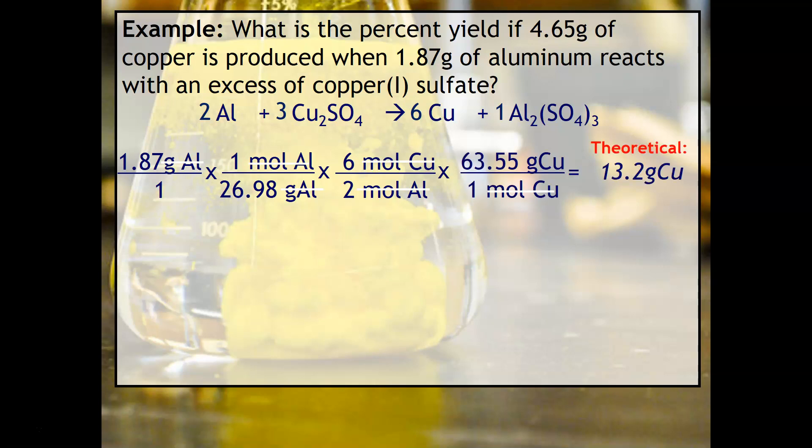We get 13.2 grams of copper as the theoretical. Anytime you do stoichiometry, that is the theoretical you're calculating.